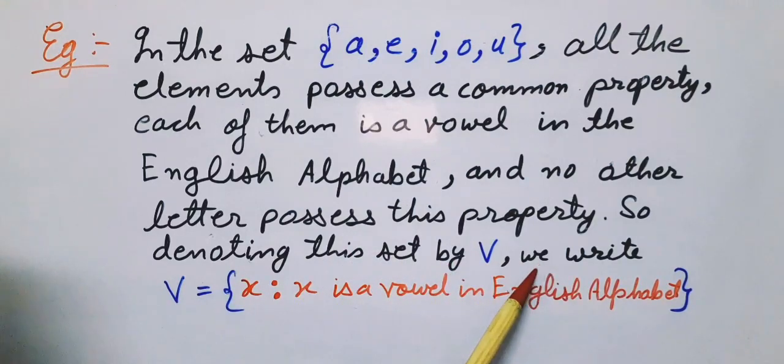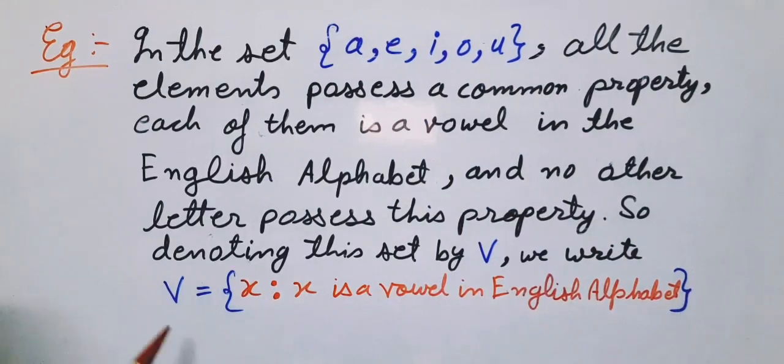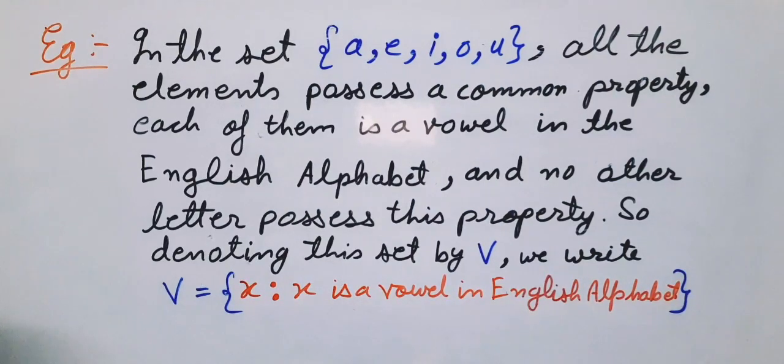So denoting this set by V, we write V = {x : x is a vowel in English alphabet}. This is how we can represent a set in set builder form.